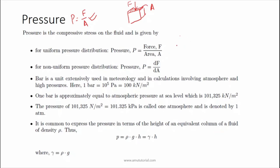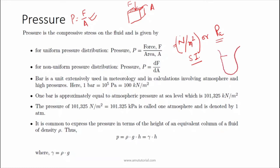The SI unit for pressure is Newton per meter square, or generally 1 Pascal, so 1 Newton per meter square is equal to 1 Pascal. If the pressure distribution is not uniform and the shape is irregular, the area is taken as dA and the change in force as dF, so the pressure dp is equal to dF over dA. This is for non-uniform pressure distribution.